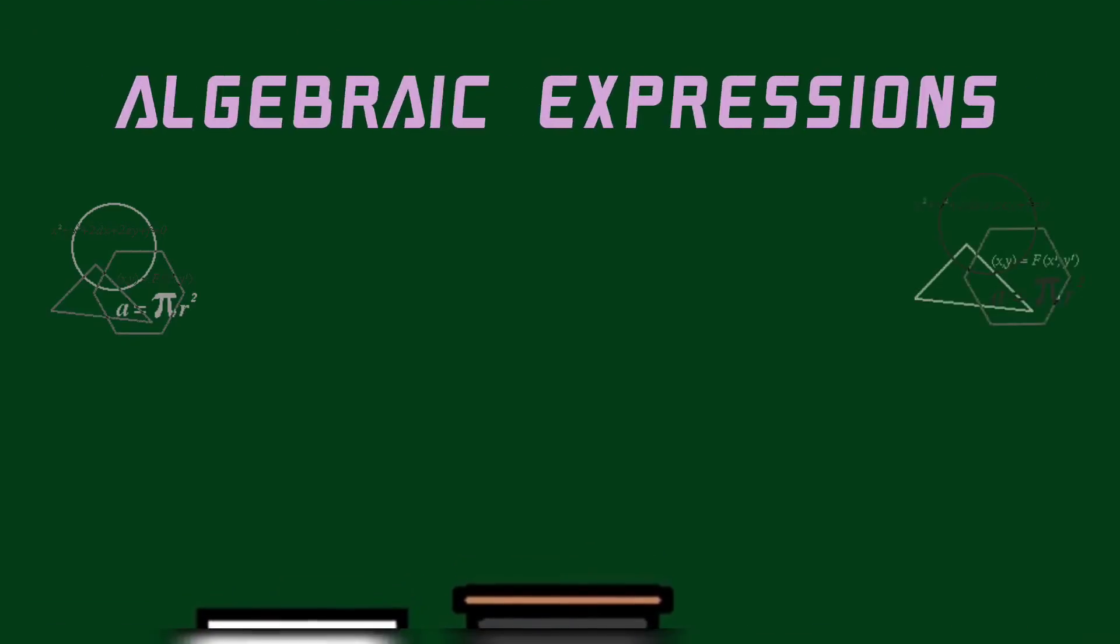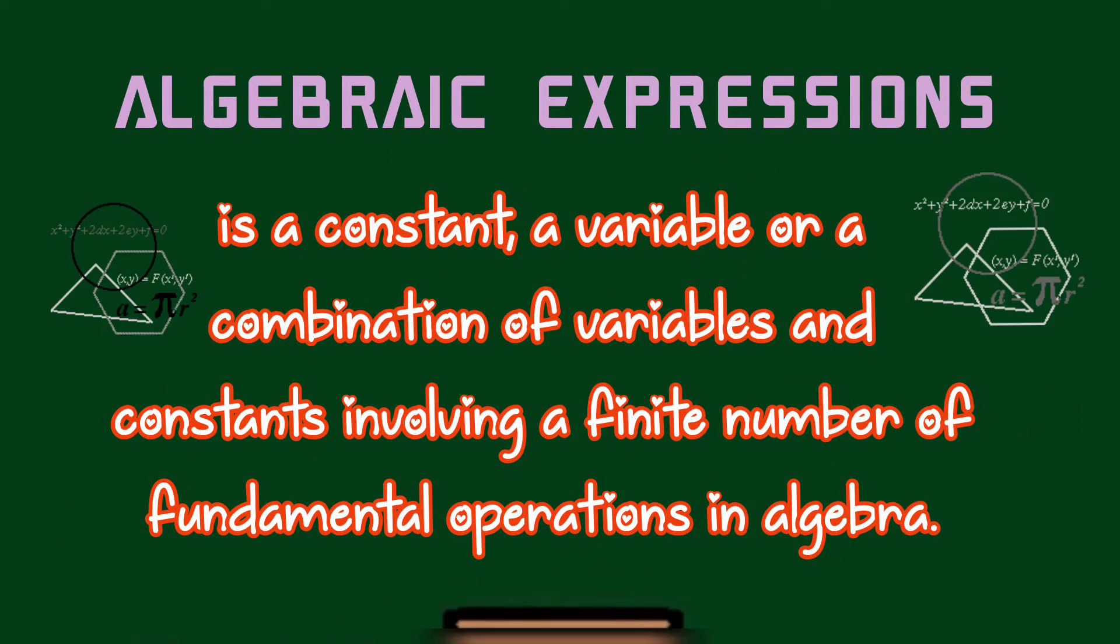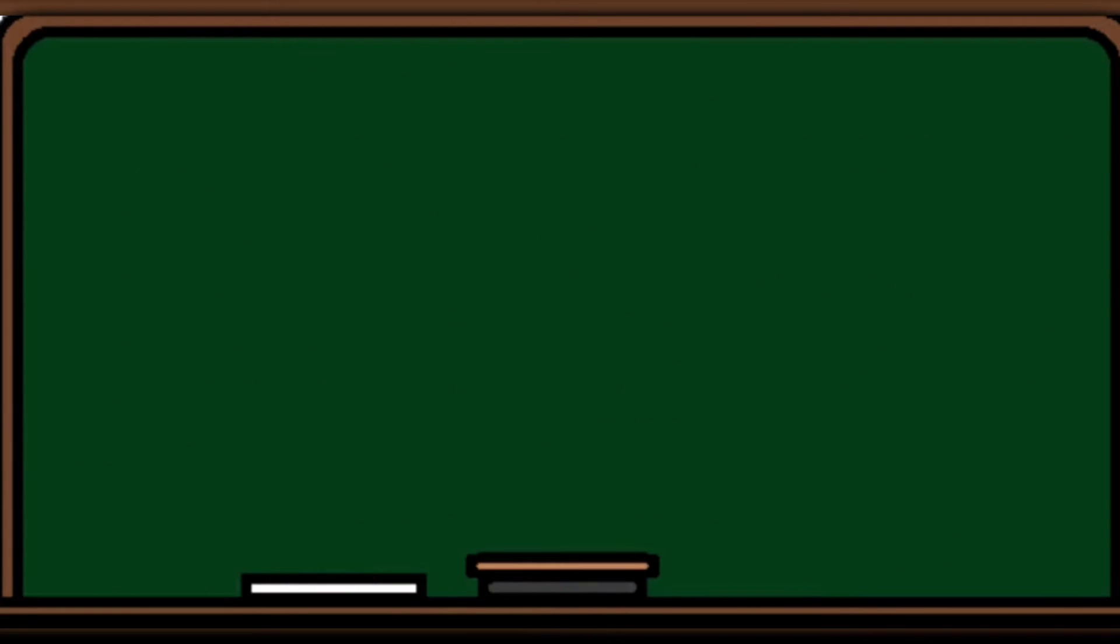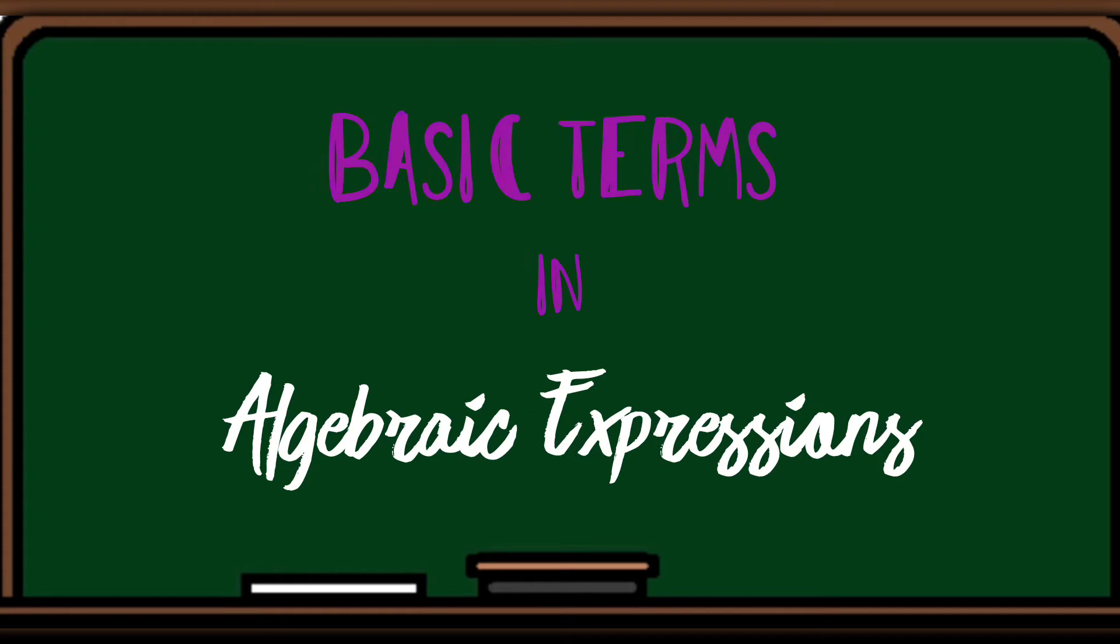Algebraic expression is a constant, a variable, or a combination of variables and constant involving a finite number of fundamental operations in algebra. Here are the basic terms used in algebraic expressions.